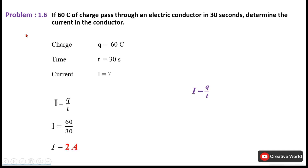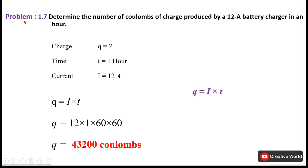Problem 1.6: If 60 coulombs of charge pass through an electric conductor in 30 seconds, determine the current in the conductor. Charge and time are given; we need to calculate current. Using I = Q / T, with Q = 60 C and T = 30 s, the current is 2 ampere.